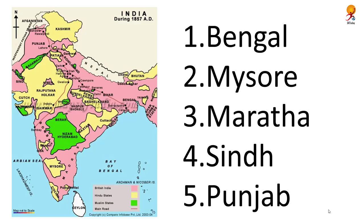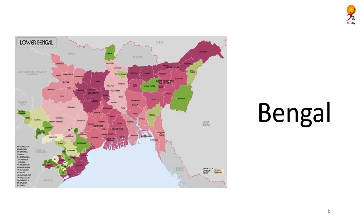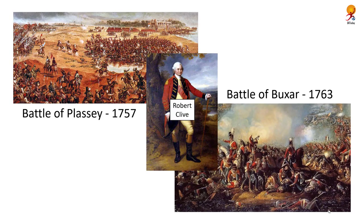In this part we are going to discuss the British conquest of India and how they expanded their reach and power. The British conquest of India can be seen in geographical sections. We start with Bengal, Mysore, Maratha, Sindh, and Punjab. There were two primary points in Bengal moving towards British rule: the Battle of Plassey and the Battle of Buxar. The principal figure who brought this to fruition was Robert Clive.